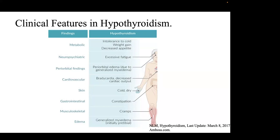Myxedema involves accumulation of glycosaminoglycans and hyaluronic acid within the reticular layers. Mucopolysaccharides bind with water, resulting in non-pitting edema. Additional features include periorbital edema, puffy face, doughy skin, and pretibial edema. If it progresses severely, it can lead to myxedematous heart disease and myxedema coma.